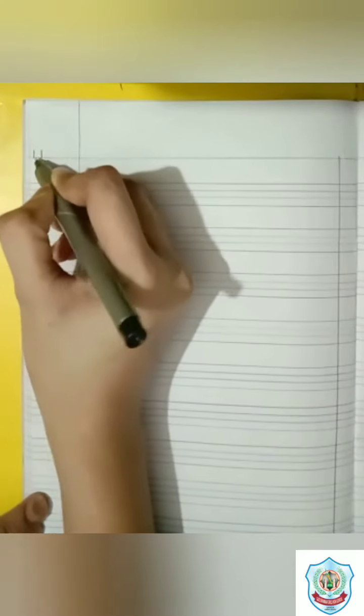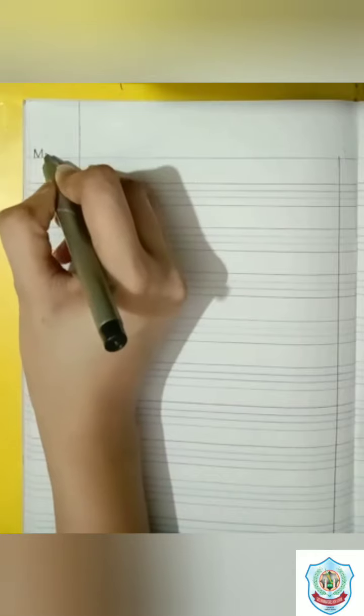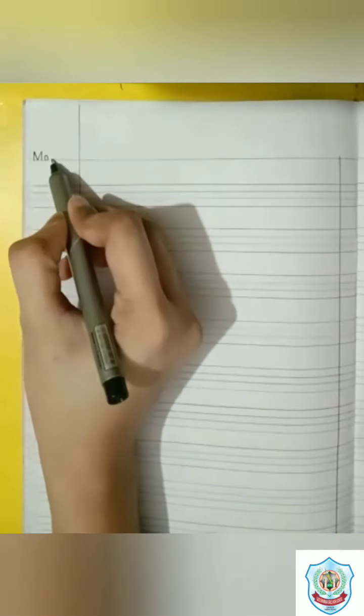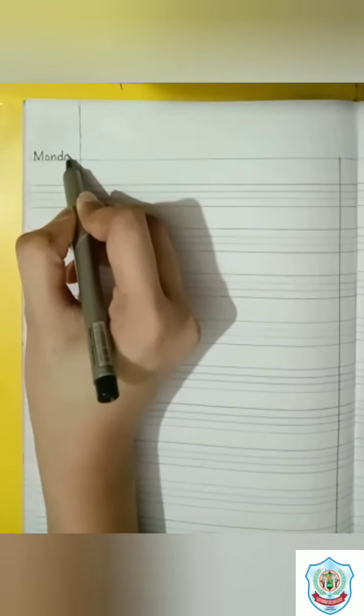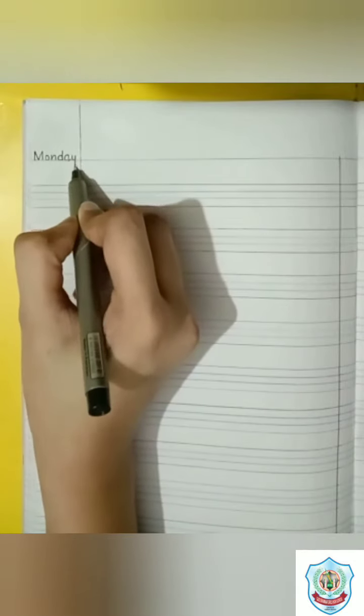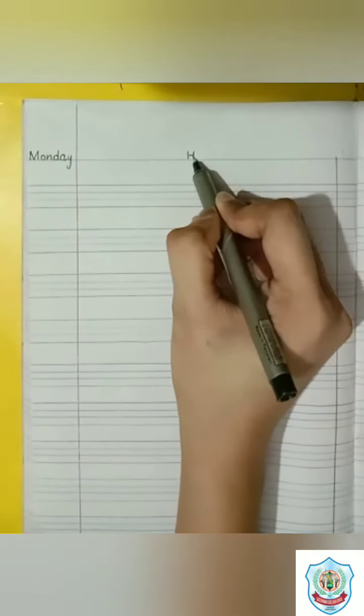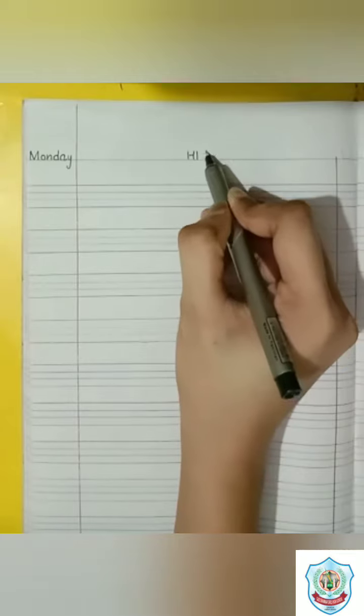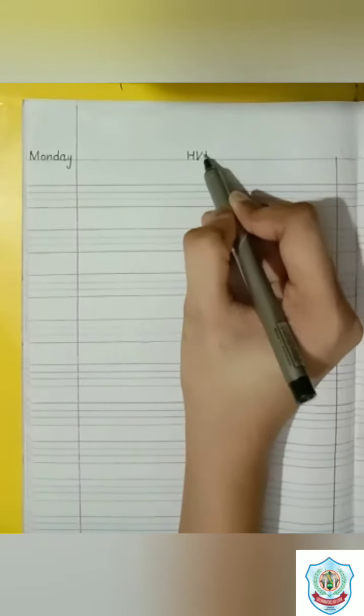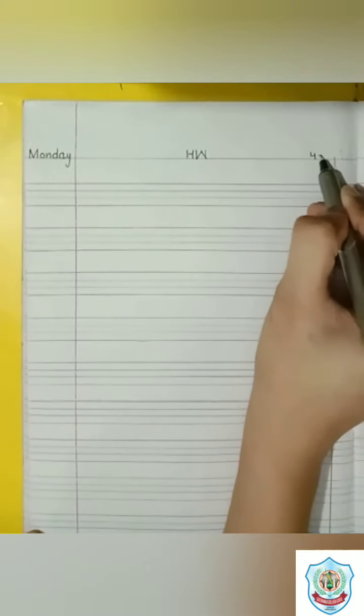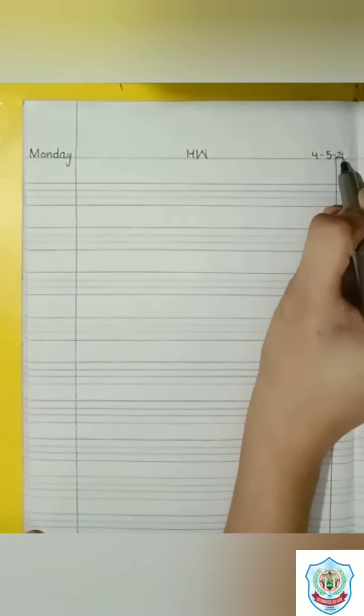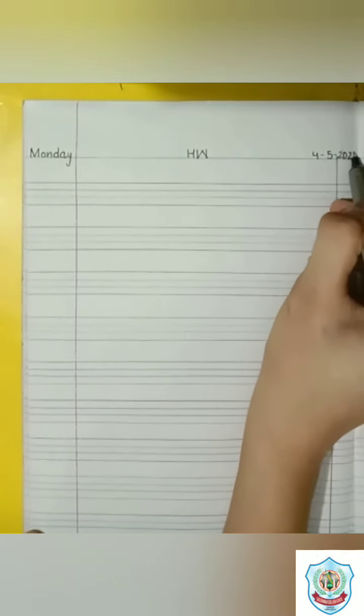It's Monday. Monday, M, O, N, D, A, Y. Monday. Write H.W. here. H, W. Write date here. 4-5-2020. For May 2020.